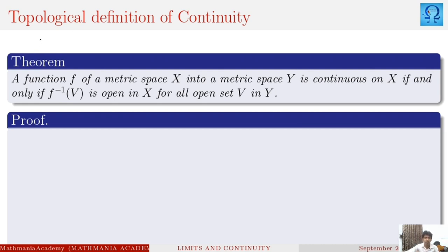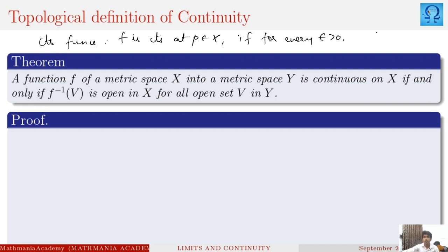Whenever we talk about the definition of a continuous function, a function f is continuous at a particular point p in X if for every epsilon positive there exists a delta positive such that d_X(x, p) less than delta will imply d_Y(f(x), f(p)) less than epsilon. This is the definition of continuity.